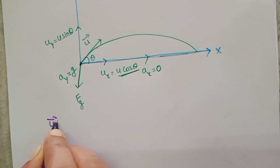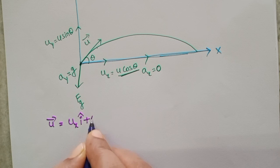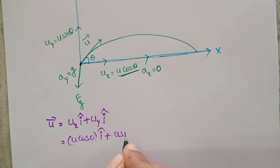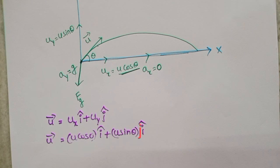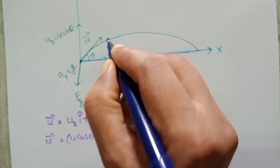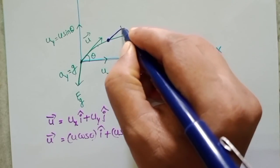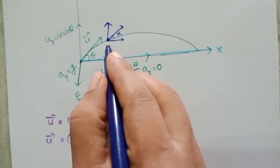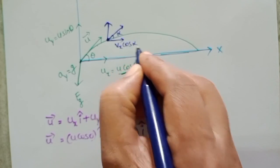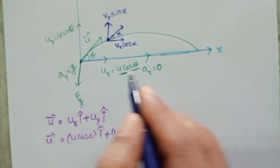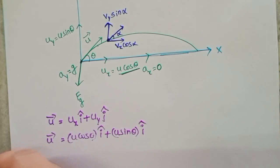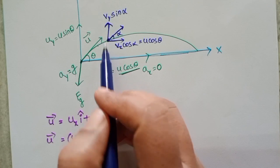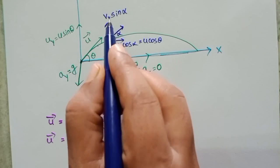The initial velocity vector u-bar equals u_x i-cap plus u_y j-cap, which is u cos theta i-cap plus u sin theta j-cap. At any instant, the object is at some position and its velocity makes an angle alpha. The horizontal component becomes v_x = v cos alpha and vertical component v_y = v sin alpha. Since there is no acceleration along x, v cos alpha equals u cos theta.